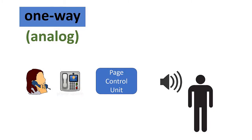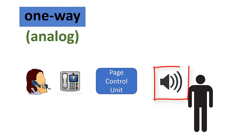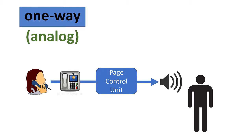As we learned in part one, a Valcom analog paging system uses a page control unit as the brains of the system and self-amplified paging speakers. A one-way analog page control unit is capable of one-way paging, but not talkback or intercom.